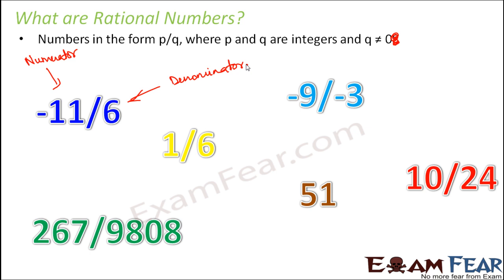Let us look at an interesting example. 51. Do you think it is a rational number? At the first instance, you might say no because it is not in the form of p by q. But if you look at it carefully, what is 51? 51 is nothing but 51 by 1. So which is in the form of p by q where p and q are both integers. 1 is an integer such that q is not equal to 0. So it satisfies the definition of rational numbers. Therefore, this is also a rational number.